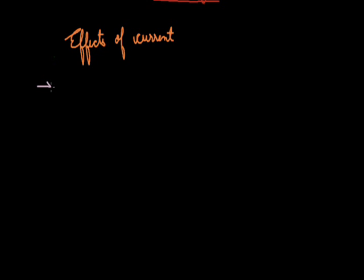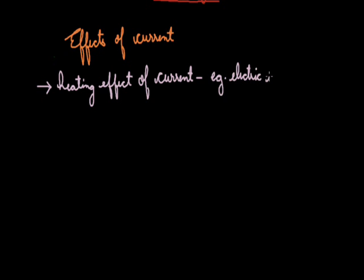Let us first discuss about the heating effect of current. This example is electric iron. At our homes, we have noticed that whenever we want to iron our clothes, we just plug the electric iron into the switch and switch on the button. After some period of time, the electric iron gets heated up. This heating effect of the iron shows that current has a heating effect.